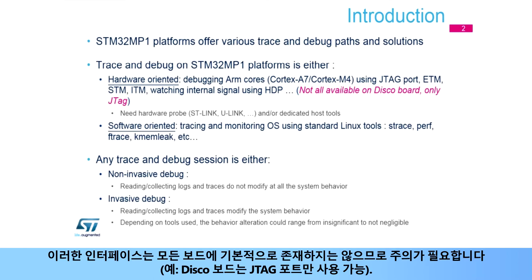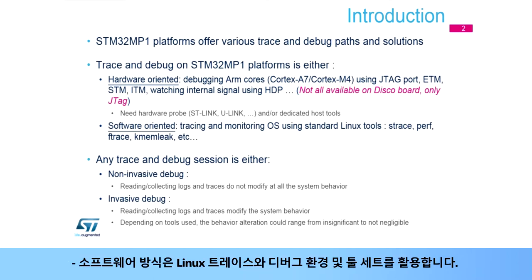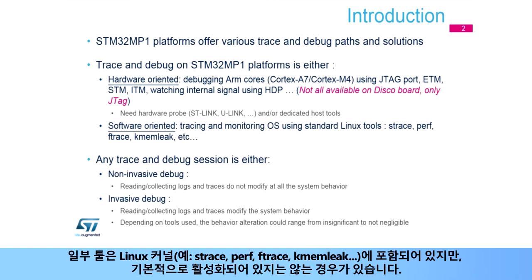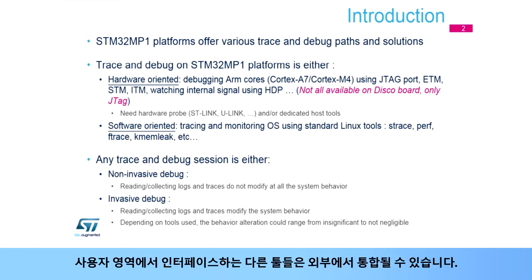For example, only the JTAG port is available on the Disco board. The software path allows the benefits of the Linux trace and debug environment and tool suite. Some of the tools are embedded in the Linux kernel, for example strace, perf, ftrace, and kmemleak — not necessarily enabled by default. Some others, interfacing at user space level, can be integrated from outside.